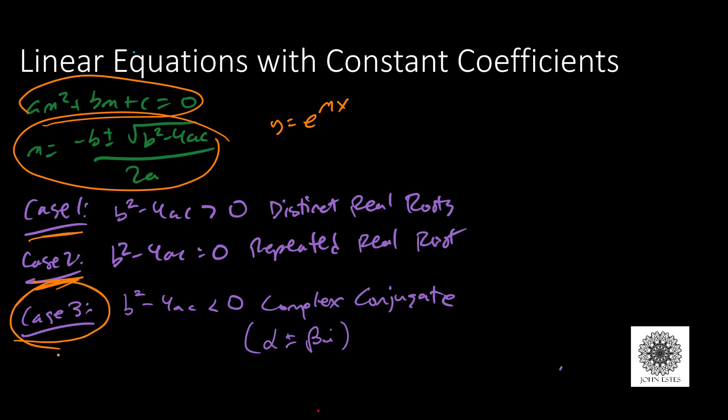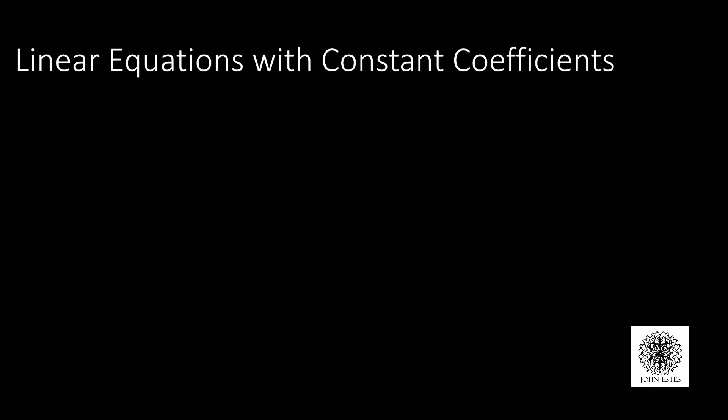In this video I'd like to cover case three where I have complex conjugate roots. When I solve my auxiliary equation, b squared minus 4ac, the discriminant, is negative, so I end up with complex conjugate roots: m equals alpha plus or minus beta i. What do you do in that situation?